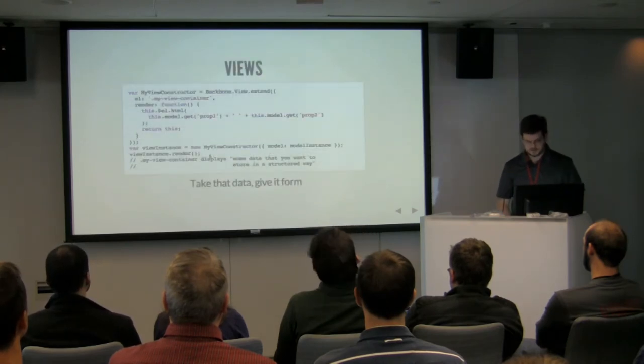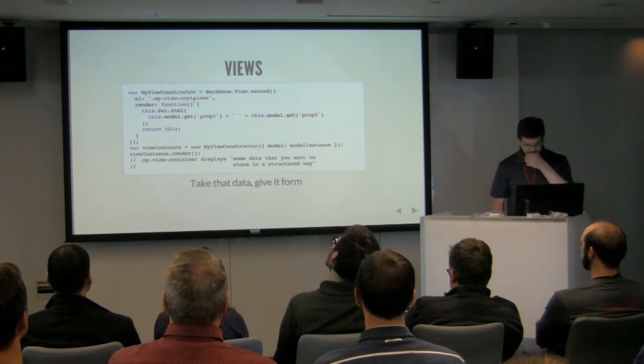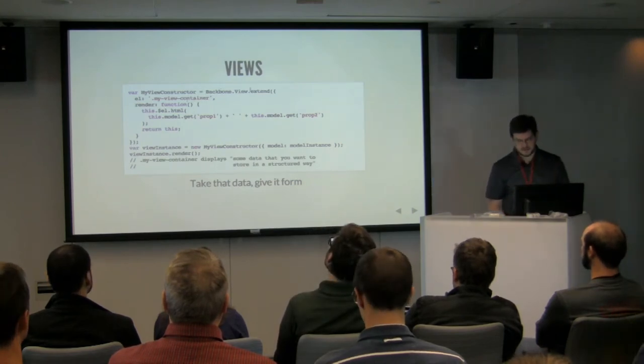Models are, at the root, very simple. You extend Backbone's own model constructor to make a constructor that you can pass in an object. The instance of a model is a Backbone model to which you've simply assigned data — prop1: 'some data', prop2: 'you want to store in a structured way'. By being explicit about getting and setting the information in this model using model.get('prop1'), the code makes it clearer that this is a piece of data you want to treat as a unit.